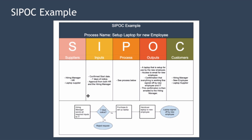As you can see, these people are involved as suppliers: the hiring manager, human resources services, and the laptop supplier. The inputs to the process include a confirmed start date for the new employee, seven days' notice for the laptop to be ordered and set up, and approval from both human resources and the hiring manager. The process itself is described in a diagram at a very high level. Once the process happens, the outputs include a laptop set up for use by the new employee, access to email, and confirmation that everything is working, signed off by the new employee and the IT department, with that confirmation emailed to the hiring manager.